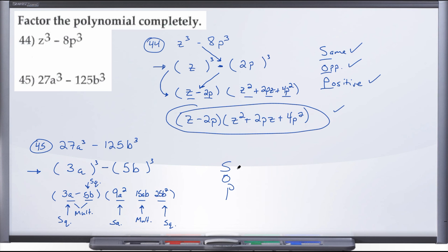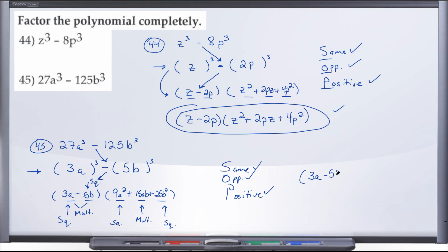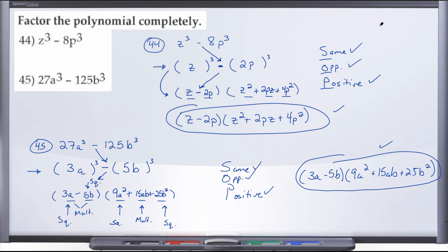Using the SOP acronym for signs: 'same' — whatever was in the original polynomial follows down, a minus. 'Opposite' — the first sign in the trinomial is the opposite of minus, so a plus. The last sign in the trinomial is always plus for positive. So the final answer is: (3a − 5b)(9a² + 15ab + 25b²). That's number 45, the last problem of this section.